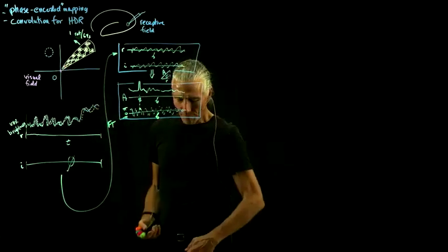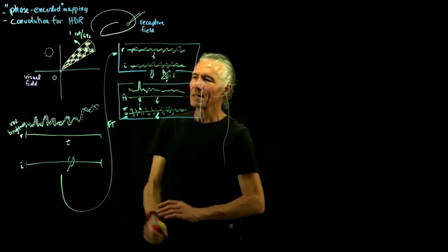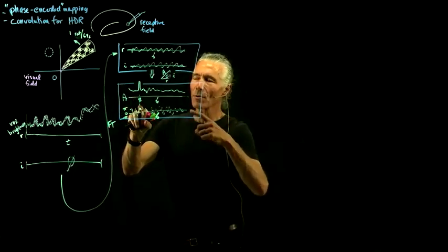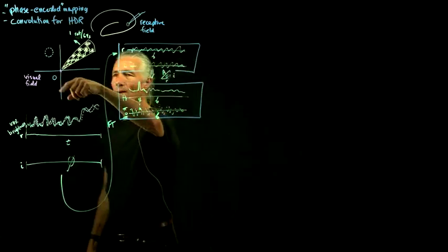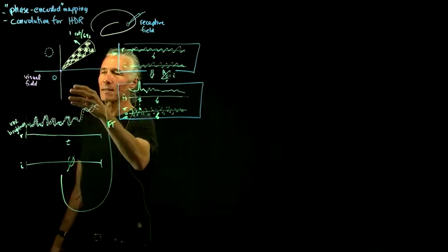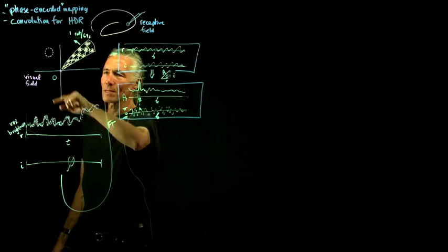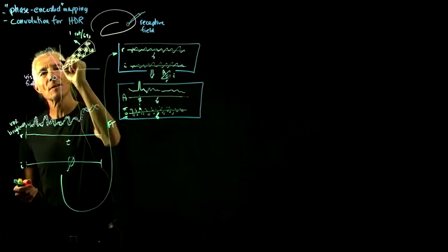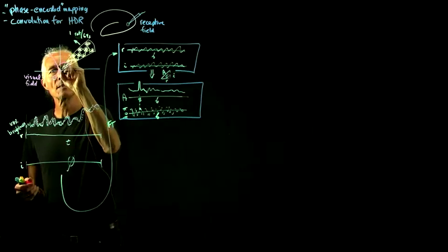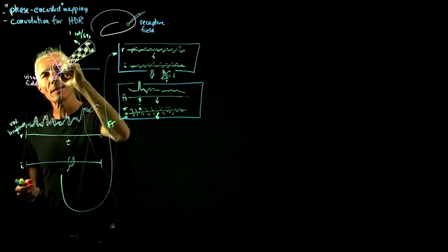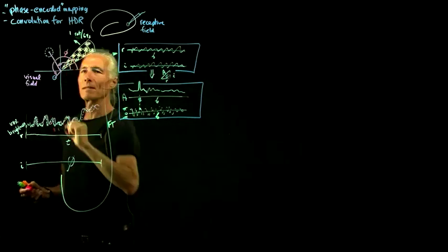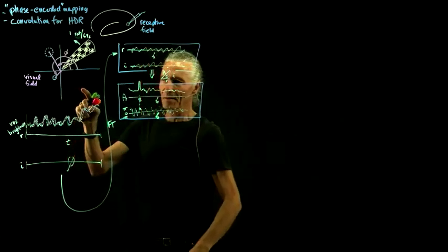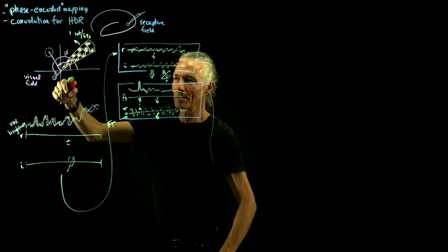By looking at the phase angle, you can tell where you are in the map — you can divide the visual field into effectively 60 or 100 different angles of the receptive field. What you're measuring is that polar angle in the visual field, which corresponds to your phase angle. However, you can't figure out the distance from the center this way, so we'll get to that in a moment.